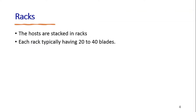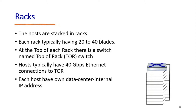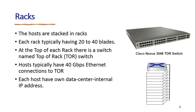Hosts are stacked in a rack, with each rack having 20 to 40 blades. At the top of each rack there is a switch called the Top of Rack, or TOR, switch. Hosts typically have a 40 gigabyte Ethernet connection to the TOR switch, and each host has a data center internal IP address. This is the Cisco Nexus 3048 TOR switch and this is how it looks in the real world.